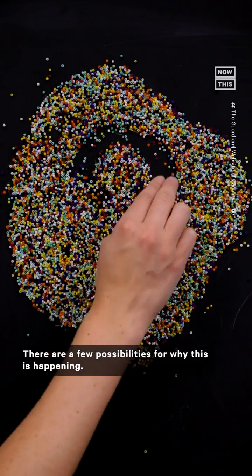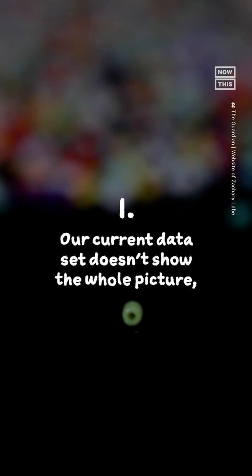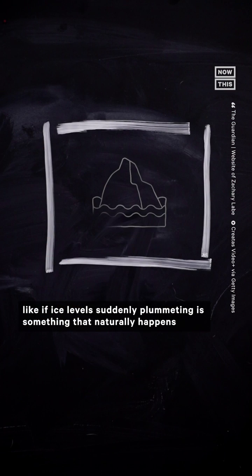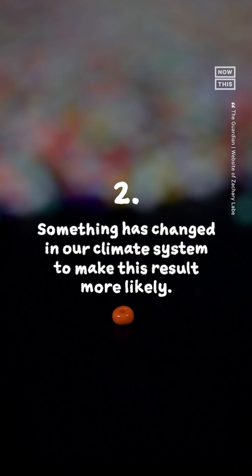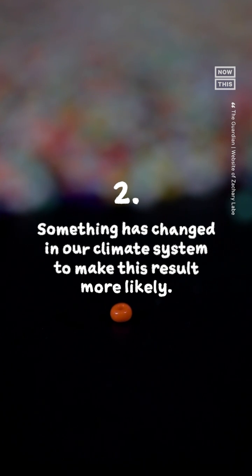There are a few possibilities for why this is happening. One, our current data set doesn't show the whole picture, like if ice levels suddenly plummeting is something that naturally happens every 100 or 500 years. Or two, something has changed in our climate system to make this result more likely.